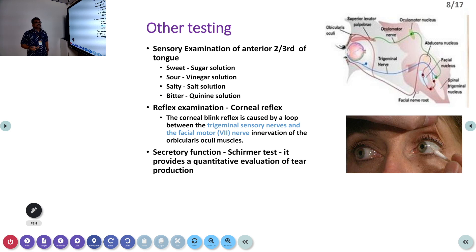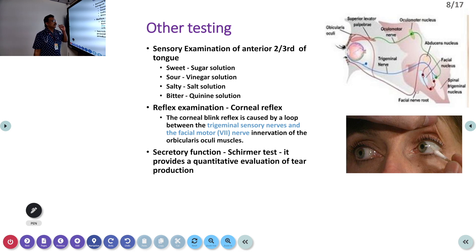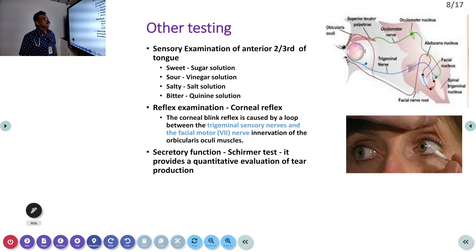The platysma is tested by asking the patient to pull down the corners of the mouth — the neck fascia will become very prominent. Test taste for the anterior two-thirds of the tongue using sweet, sour, salt, and bitter solutions. Pull out the tongue with cotton, then slowly apply each solution and ask the patient whether it is sweet, salt, or bitter. Each time, the patient should wash the mouth. Ideally the patient should not speak — just touch and indicate. When the patient cannot identify a taste, that part of the cranial nerve is involved.